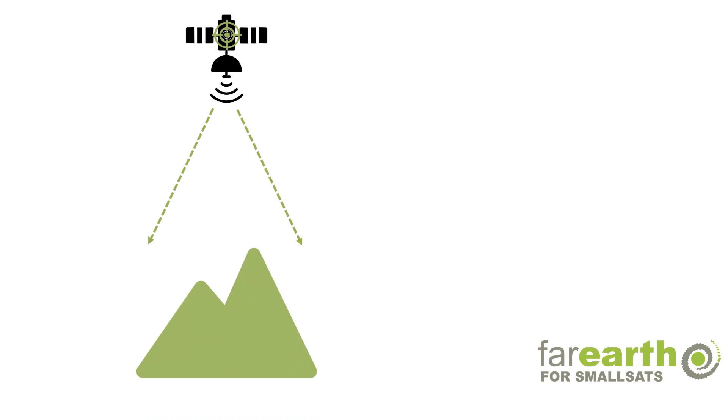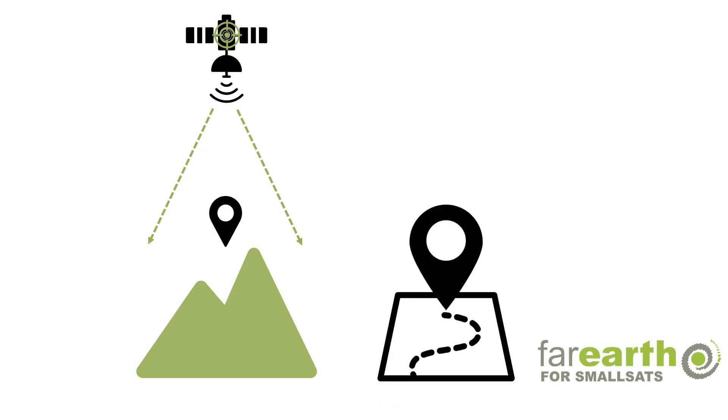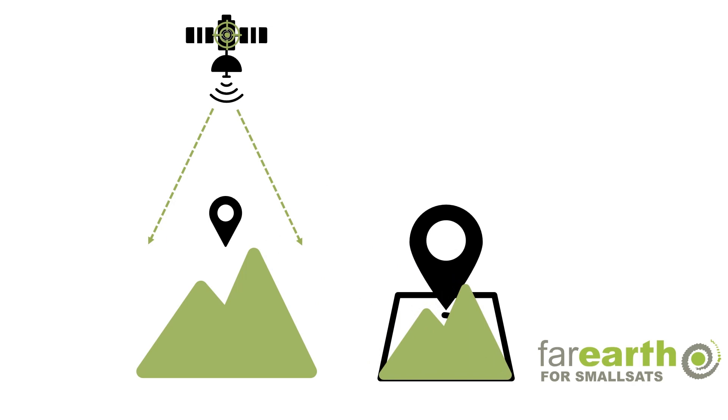If we have a camera up here in space, and this is an example of a mountain top, then the camera images the top of that mountain as if it's over here, when its true map location is supposed to be over here. So the process of orthorectification is essentially moving the image pixel from where it appears to its correct map location.